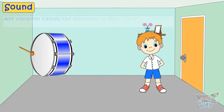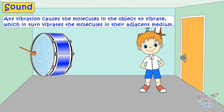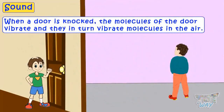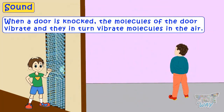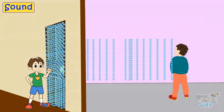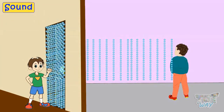Now let's see how sound waves propagate or move. Any vibration causes the molecules in the object to vibrate, which in turn vibrates the molecules in the adjacent medium. Like when a door is knocked, molecules of the door vibrate and they in turn vibrate the molecules in the air. This vibration passes on to the next molecules, and this way sound travels from the door to the listener.